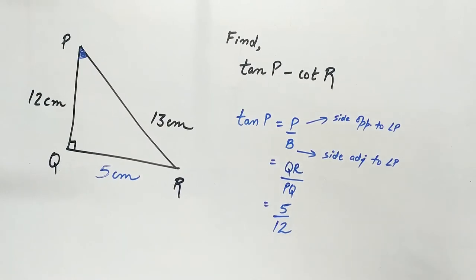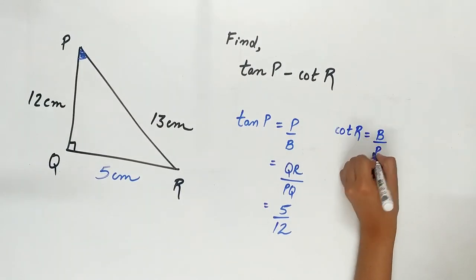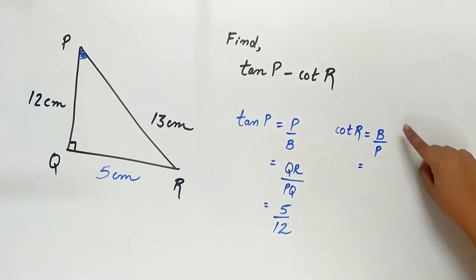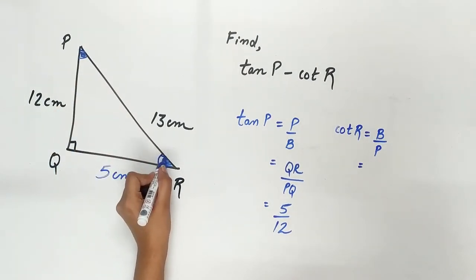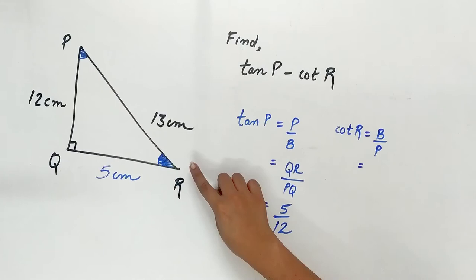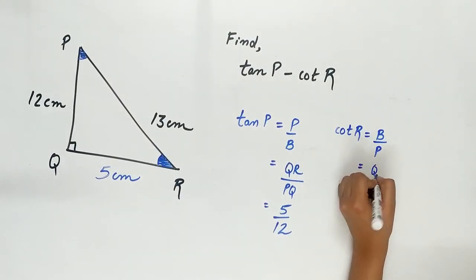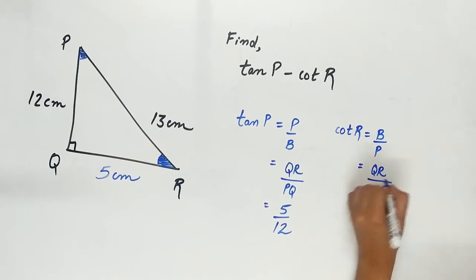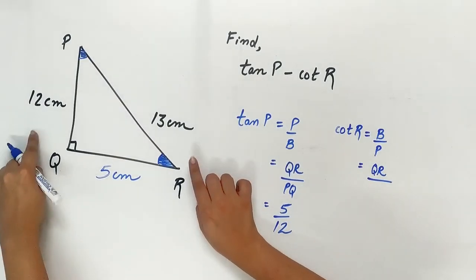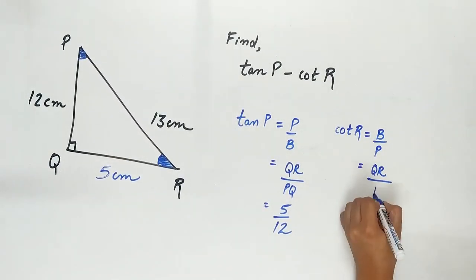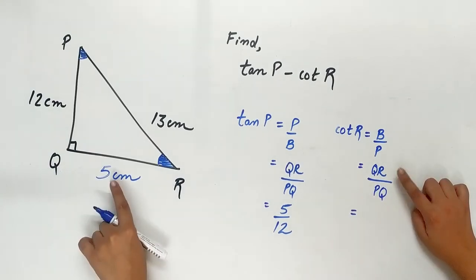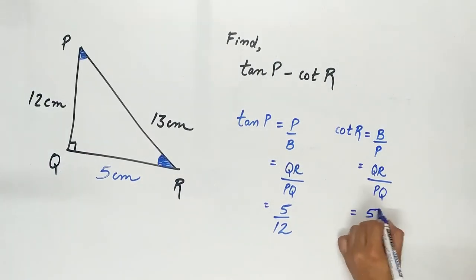Let's find out cot R. Cot equals base upon perpendicular. Base is the side adjacent to angle R. So adjacent side is QR. And perpendicular is the side opposite to angle R, that is PQ. QR is 5 cm, and PQ is 12.